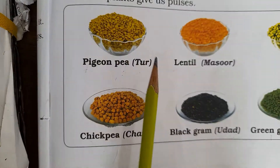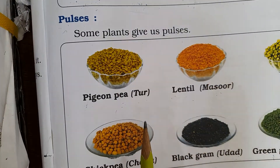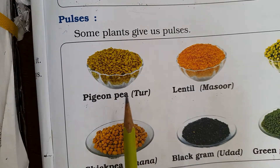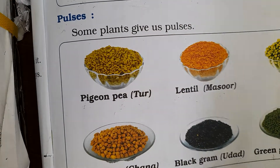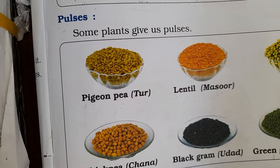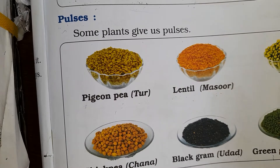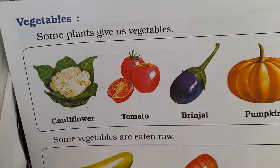Second: pulses. Which pulses do we get from plants? Pigeon pea, lentil, peas, chickpeas, black gram, and green gram.